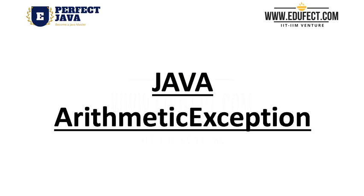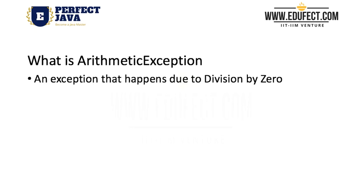Let us learn about arithmetic exception. In the last lesson we had learned that arithmetic exception is a kind of an unchecked or a runtime exception. So what is an arithmetic exception? An arithmetic exception happens when there is division by 0. We know that in maths division by 0 is not defined — in other words, we cannot divide a number by 0. So if in a program at any point we try to divide a number by 0, an arithmetic exception occurs.